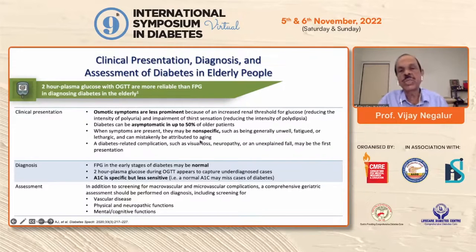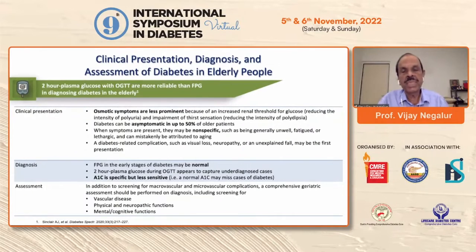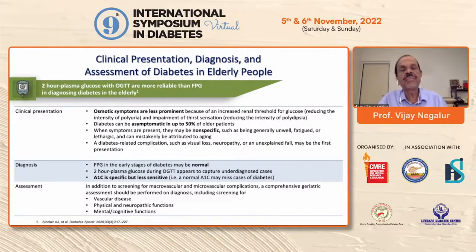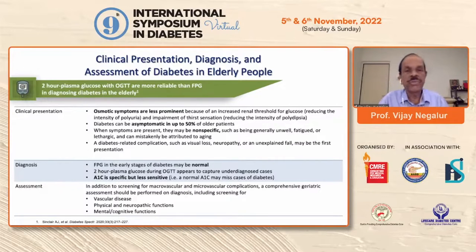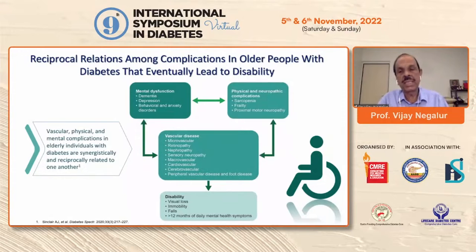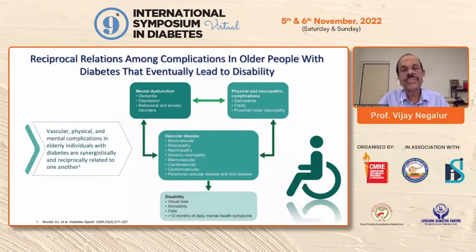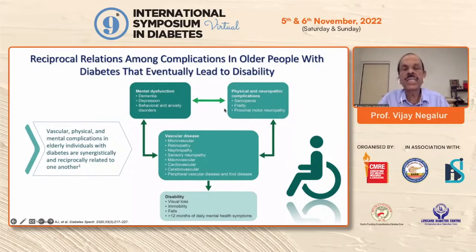The presentation is also quite peculiar in elderly patients. They do not have osmotic symptoms because there is an altered renal threshold, and about 50% are asymptomatic. The remaining 50% present with non-specific manifestations such as fatigue and lethargy, which can be mistaken for normal aging. In addition, you need to screen for vascular disease, physical and neuropathic function, and mental and cognitive functions. Alan Sinclair's article describes a reciprocal relationship where diabetes and these syndromes are synergistically related, with a correlation between mental dysfunction, physical and neuropathic complications, and vascular disease.